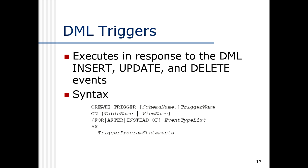In comparison, our DML triggers execute in response to our three standard action queries: insert, update, and delete. We give it a name — the trigger name must be unique in the database. Then we have the on clause where we can create a trigger on a table, which is what we do most of the time, but also on a view. Then we have three choices of timing: for, after, and instead of. For and after are the same thing — the difference between them is immaterial. We're encouraged these days to just say after.